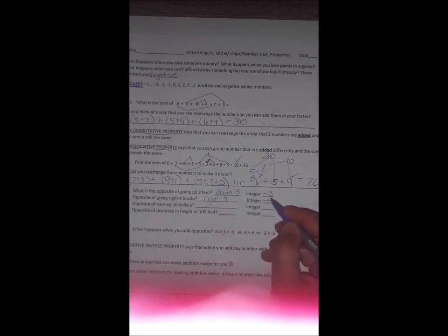Okay. Let's get used to using some words because we're going to be doing word problems. That's when it starts to get a little more challenging. What's the opposite of going up three feet? And if you write it as an integer, it'd be negative three, down three. What is the opposite of going right four blocks? That's right. Left four or negative four. What is the opposite of earning $10? That would be spending $10. That would be taking out of your bank account or your pocket. So it's negative. What is the opposite of a decrease in height of a hundred feet? That would be an increase of a hundred, which would be positive. You can write the positive sign or not. You don't have to write positives, but you always have to write the negative sign when you have a negative.